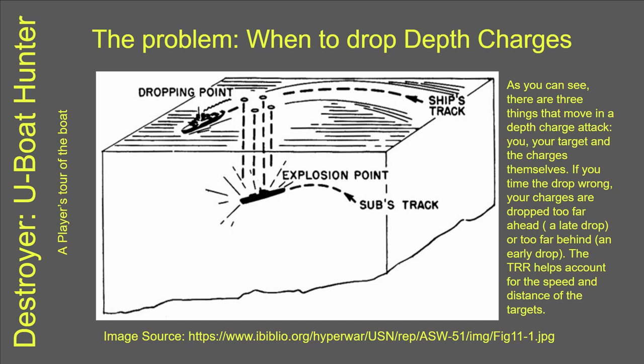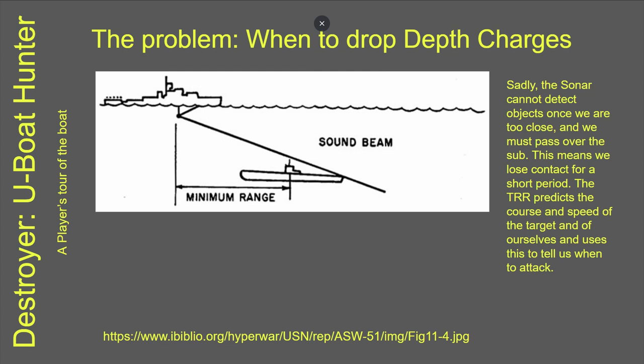It's very hard to estimate the sub's position and speed without something like sonar, and that's a great help. However, there is a massive problem: when you go over the target, you lose contact with it. The TRR is the solution to this. What it will do is predict the course and speed of the target, and then you as the user can use that information to successfully, hopefully, drop depth charges at the right location.